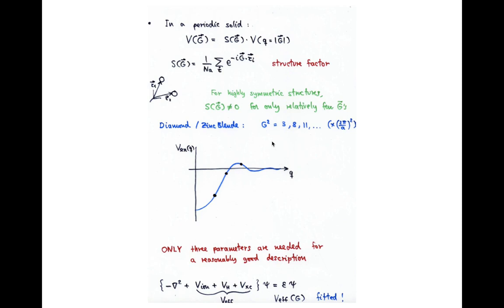For a typical structure in a solid, this thing is different from zero only for relatively few G vectors. And in the range in which your pseudopotential Fourier transform is not zero,